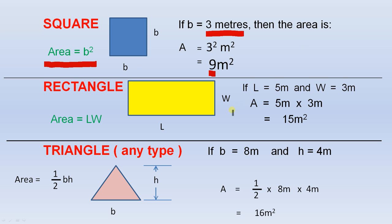For the yellow rectangle, we have the length of the rectangle is L and the width is W. The area of the rectangle is LW. The particular example, if L equals 5 meters and W equals 3 meters, then the area is 5 meters by 3 meters, which is 15 square meters, because 5 threes are 15.